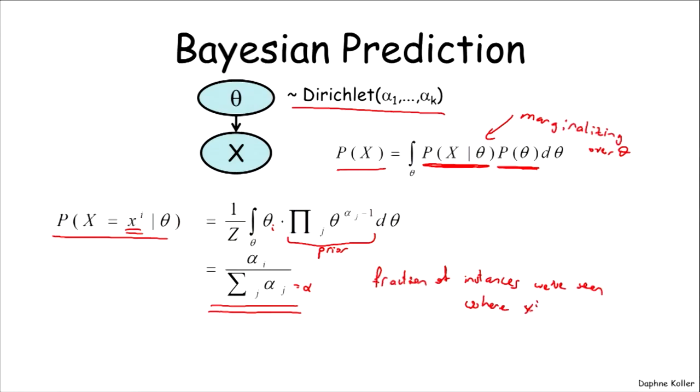So if alpha i represents the number of instances that we've seen where the variable took the value little xi, the prediction very naturally is simply the fraction of the instances with that property. And so once again, we see that there is a natural intuition for the hyperparameters as representing a notion of counts.